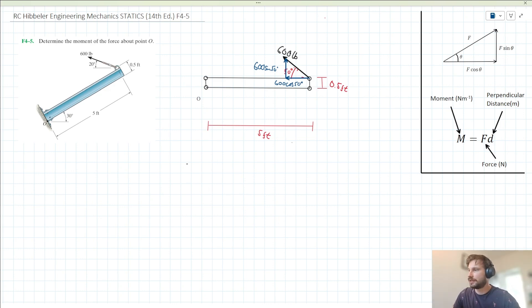We can say that the sum of moments acting about point O, acting anticlockwise, is equal to - we're going to have the 600cos50 horizontal component acting at a perpendicular distance of 0.5, so we've got 0.5 times 600cos50 for the horizontal component there, and then for the vertical component, that's acting at a perpendicular distance of 5 feet away from point O, so we can say that moment will be 5 times 600sin50 there.